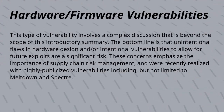Hardware and firmware vulnerabilities include unintentional flaws in hardware design, as well as intentional vulnerabilities to allow for future exploits. These concerns emphasize the importance of supply chain risk management. The Meltdown and Spectre incidents are prime examples of this type of vulnerability.